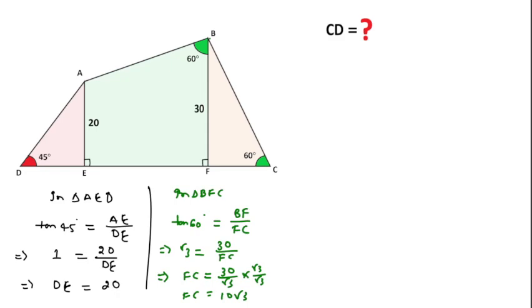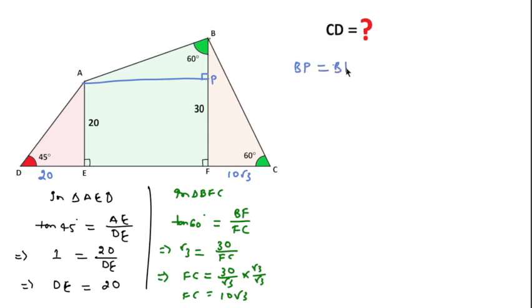After that, the problem is: we have found DE length is 20 and FC length is 10√3, but how will we find the length of EF? This is the actual problem for few. For this, I will draw a perpendicular line from A to BF. This gives a right angle triangle. Let's call the foot P. BP equals BF minus AE, so BP equals 30 minus 20, which is 10.